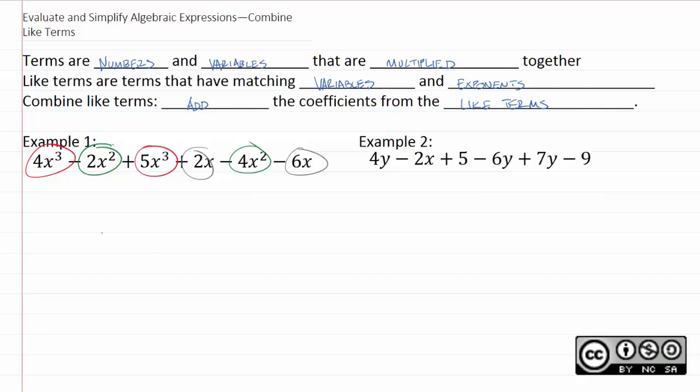4x cubed plus 5x cubed. Again if you have 4 of something and 5 of something that comes out to 9x cubed. Be careful, the variable never changes. The variable and its power never change as a result of adding or subtracting like terms. So you're going to have 9x cubed.